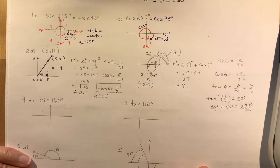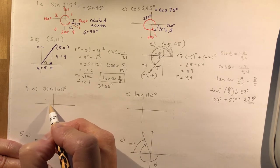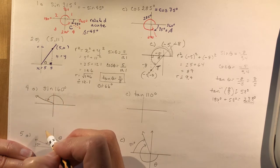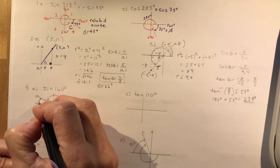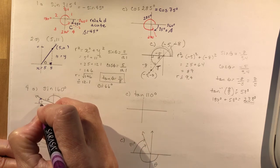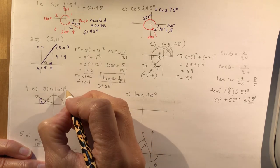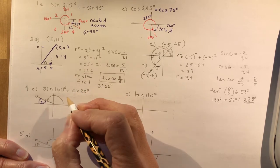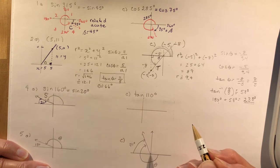Number four says: use related acute angles to state an equivalent expression. The sine of 160 degrees — put it where it belongs in your coordinate plane. 160 would be about here in quadrant two. The related acute angle is the distance from the nearest x-axis, so that's 20 degrees. Since sine is positive in this quadrant, the sine of 160° = the sine of 20°. You can test it on your calculator.